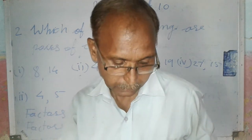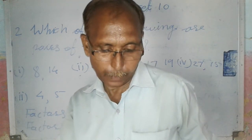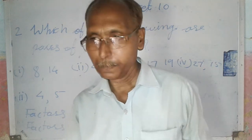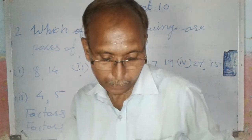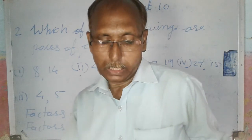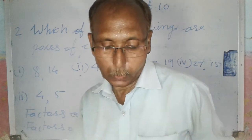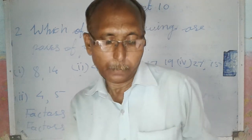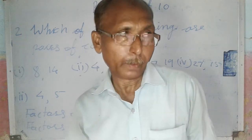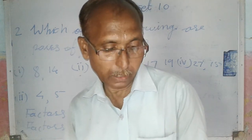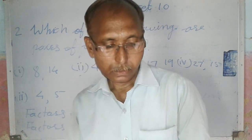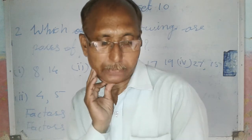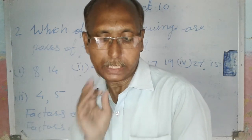The next question asks to write all twin prime numbers from 51 to 100. Twin prime numbers are pairs where the difference between two prime numbers is 2. Those pairs are 59 and 61, and 71 and 73.